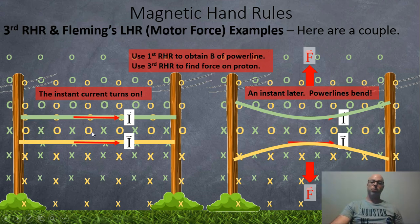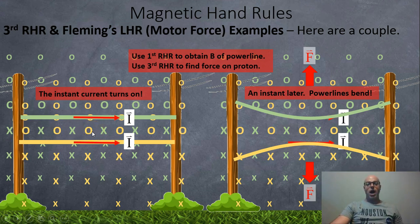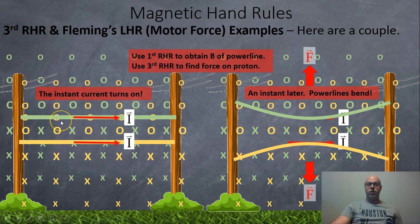Maybe a compass wouldn't know which way to face at this point — it might start swirling or do nothing. But notice these green X's are intersecting the gold line, and the golden O's are intersecting the green line. So now there's going to be some bending force on both of these power lines.